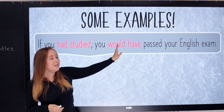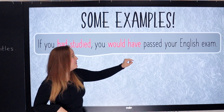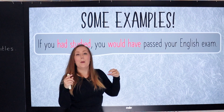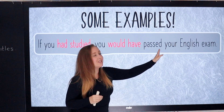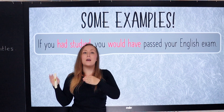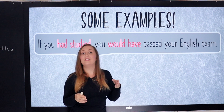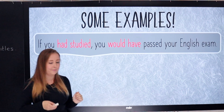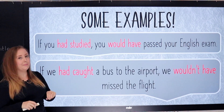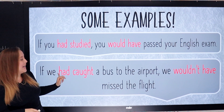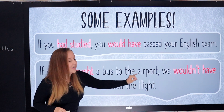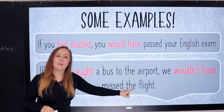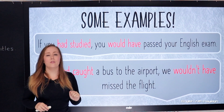'You would have' — so we have 'would' and 'have' and then the past participle. Because 'study/pass' is a regular verb, we just add -ed. 'You would have passed your English exam.' Let's take a look at another one: 'If we had caught a bus to the airport, we wouldn't have missed the flight.'